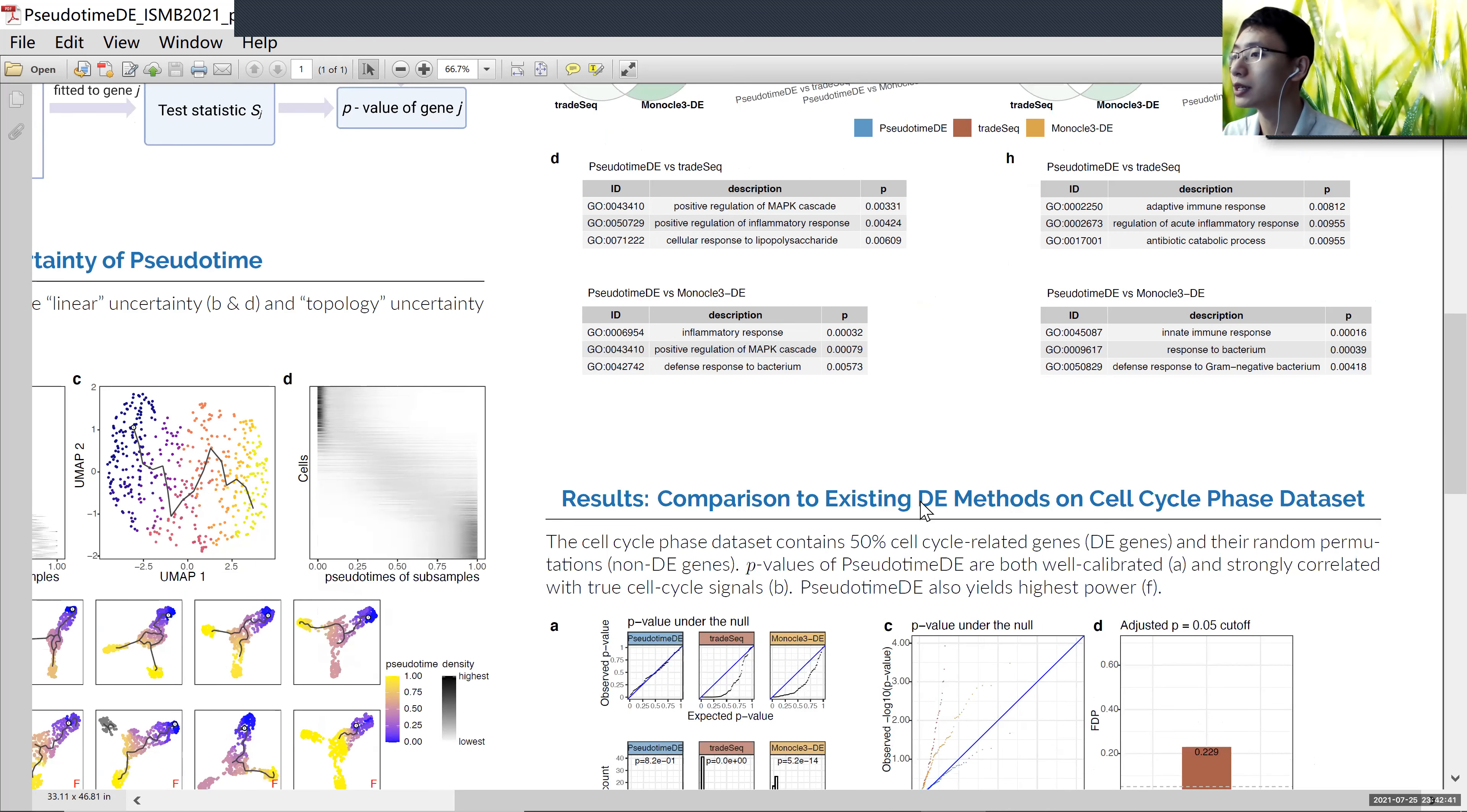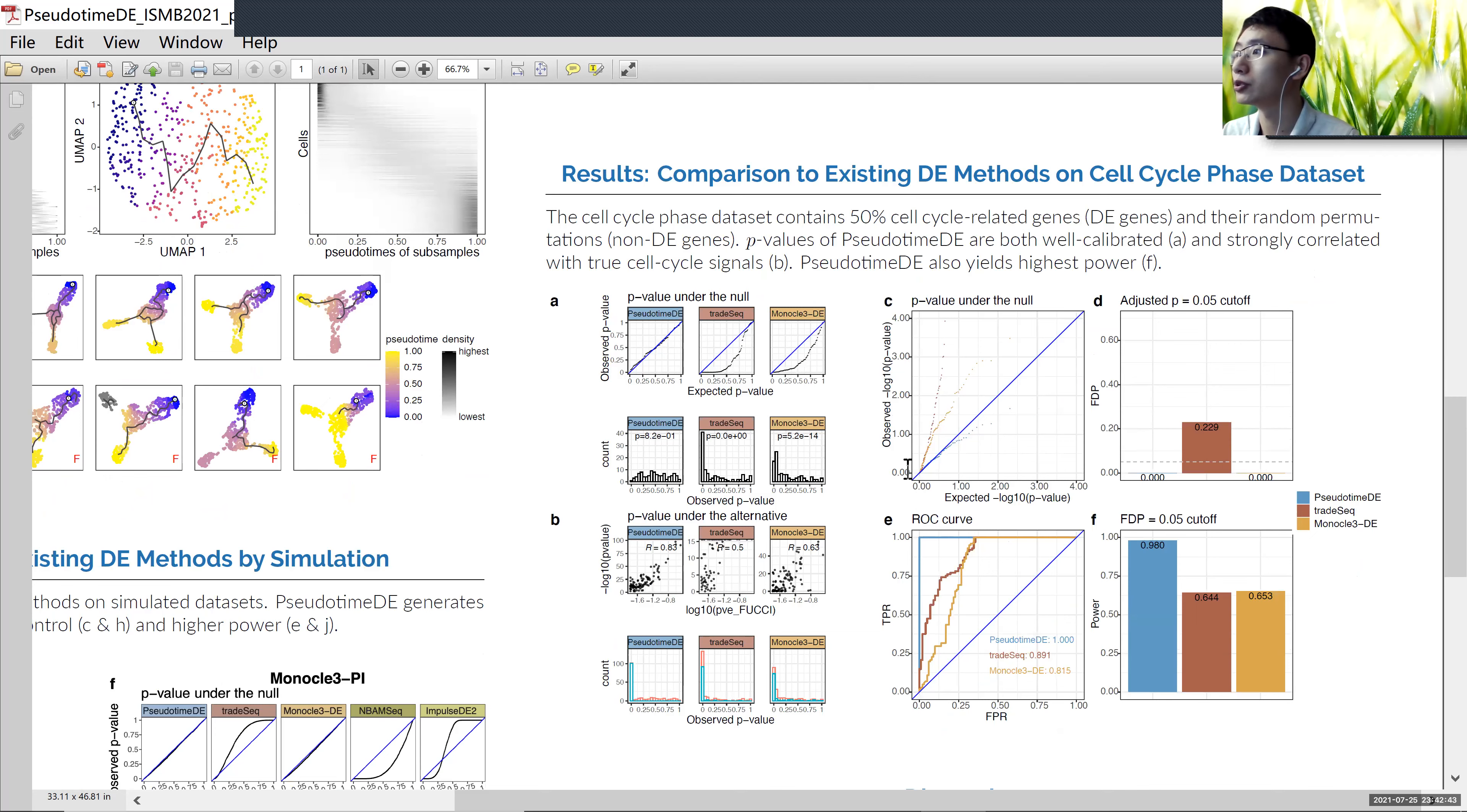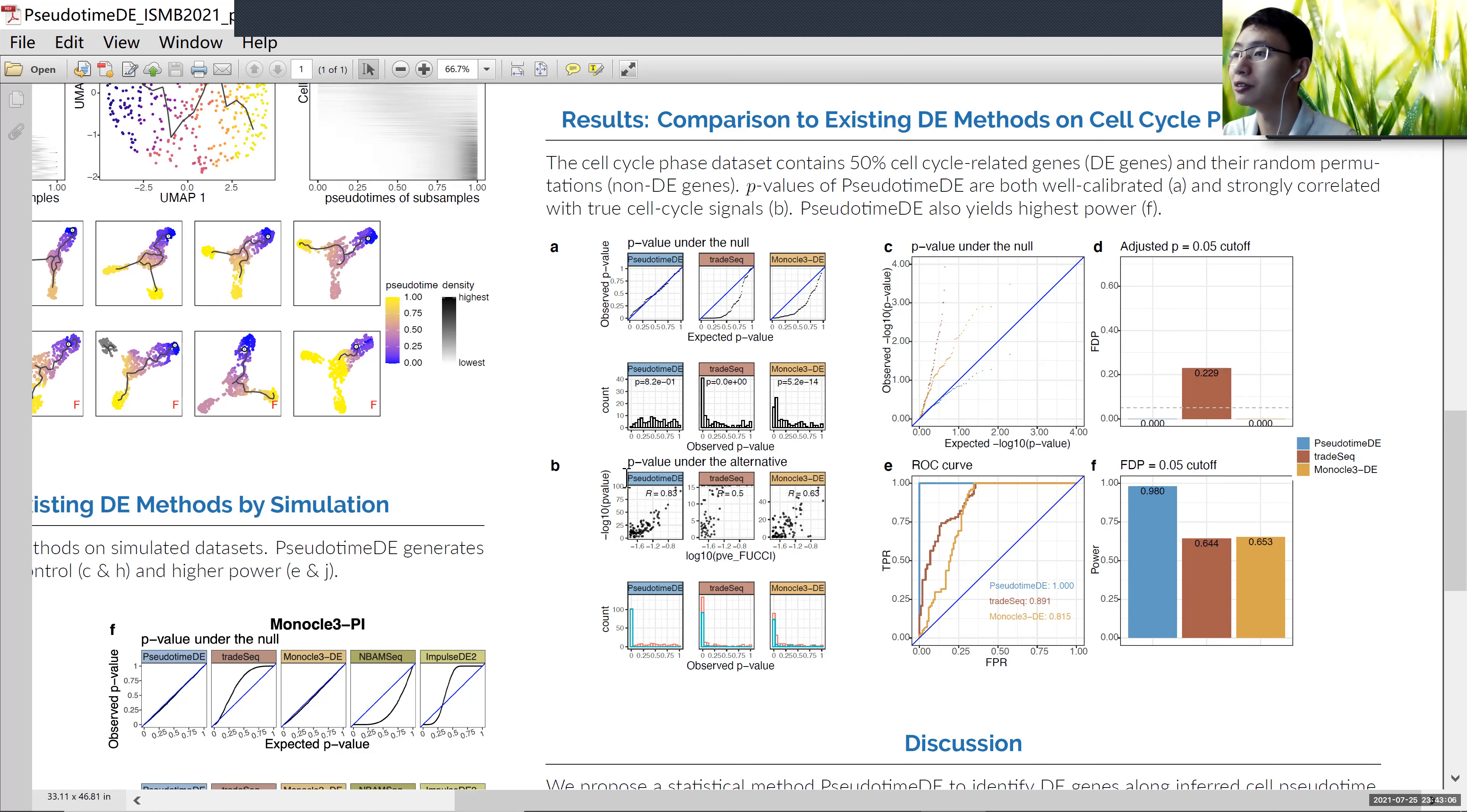The second data set, we try to use PseudotimeDE to identify cell cycle related genes. In this data set, we have the true cell cycle related genes and we use their permutation as the null cases. And we can see only PseudotimeDE can generate well-calibrated p-values under the null.